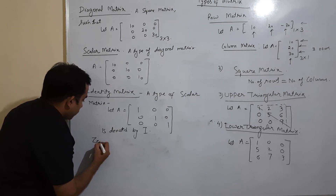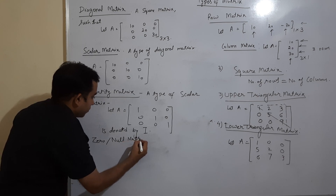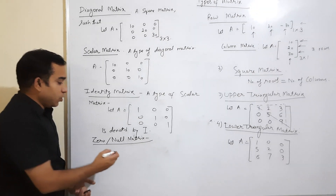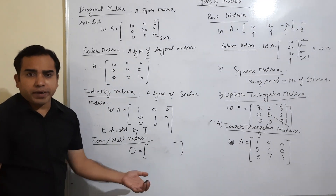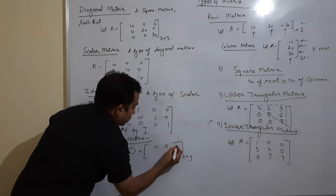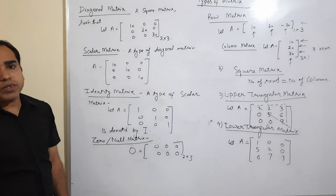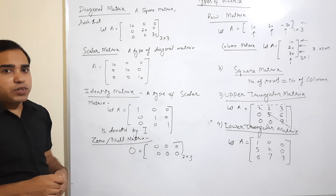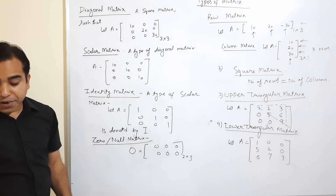One more type is the zero matrix, also called the null matrix. It is clear from the name and it is denoted by zero. It can be of any order — not necessarily square. For example, a 2×3 matrix in which all entries are zero is a zero matrix. So a zero matrix is a matrix in which all entries are zero. These are the important terms associated with matrices. Thank you.